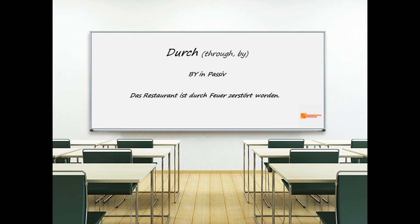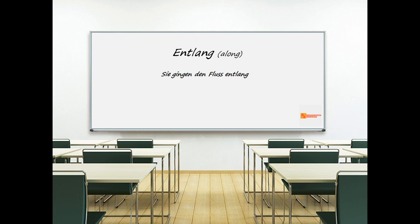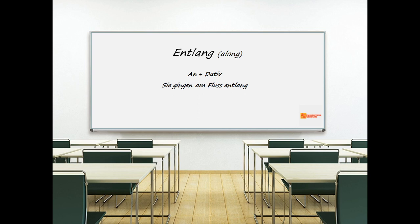'Entlang' means 'along'. It differs from nearly all other prepositions in that it follows its noun. Example: 'Sie gingen den Fluss entlang' — they walked along the river. It is possibly somewhat more common, however, to use 'entlang' in combination with 'an' plus dative with exactly the same meaning. So 'sie gingen am Fluss entlang' and 'sie gingen den Fluss entlang' both mean the same thing.